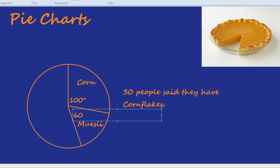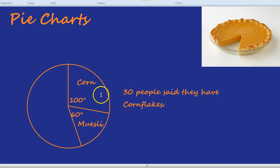But how on earth would we find out how many people like muesli just from that? We have 30 people liking cornflakes, that's for sure, and we have this pie chart with a 100 degree angle for cornflakes and a 60 degree angle for muesli. But we can use that pie chart to find out how many people had muesli.